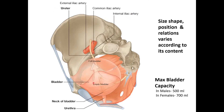The urinary bladder is a hollow viscus with muscular walls whose main function is to store urine and help in the voiding of urine. It is hollow to accommodate urine, and its walls are muscular to give it distensibility as well as the ability to contract when urine is expelled. The muscle forming its wall is known as the detrusor. Its size, shape, position, and relations vary according to its content.